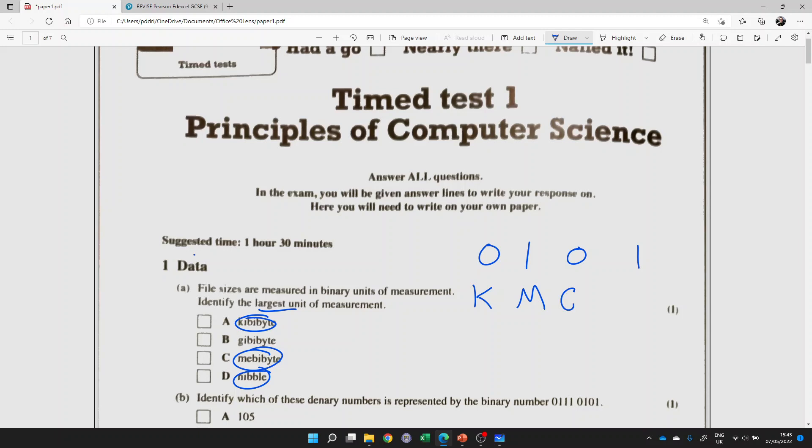1024 tebibites makes a pebibite, which you don't need to know about for the exam, but it makes a nice acronym to help you remember it, because you can have something like kangaroos make giraffes take photos, or kick my granny to pieces, if you particularly like a violent one to help you remember it.